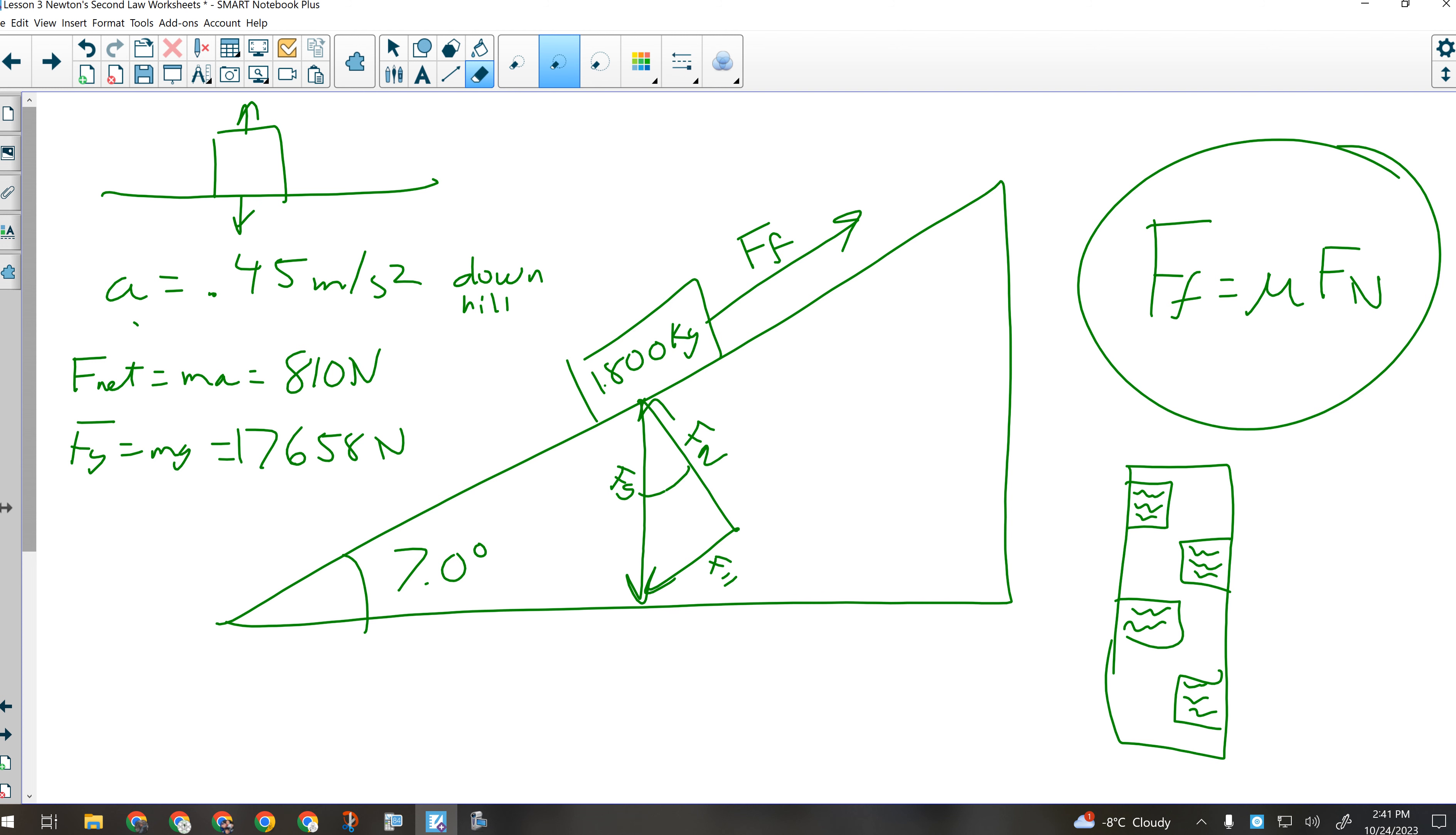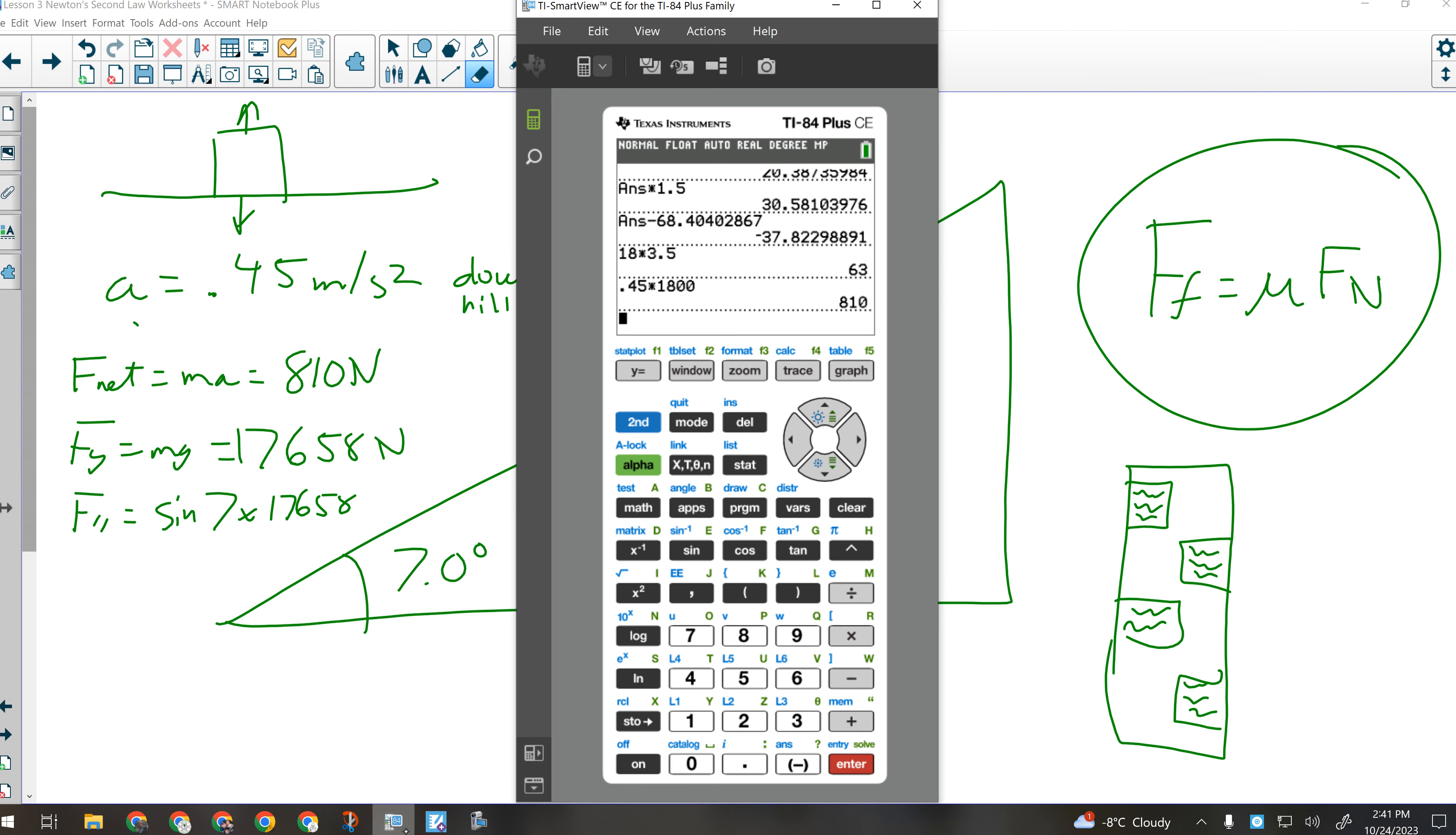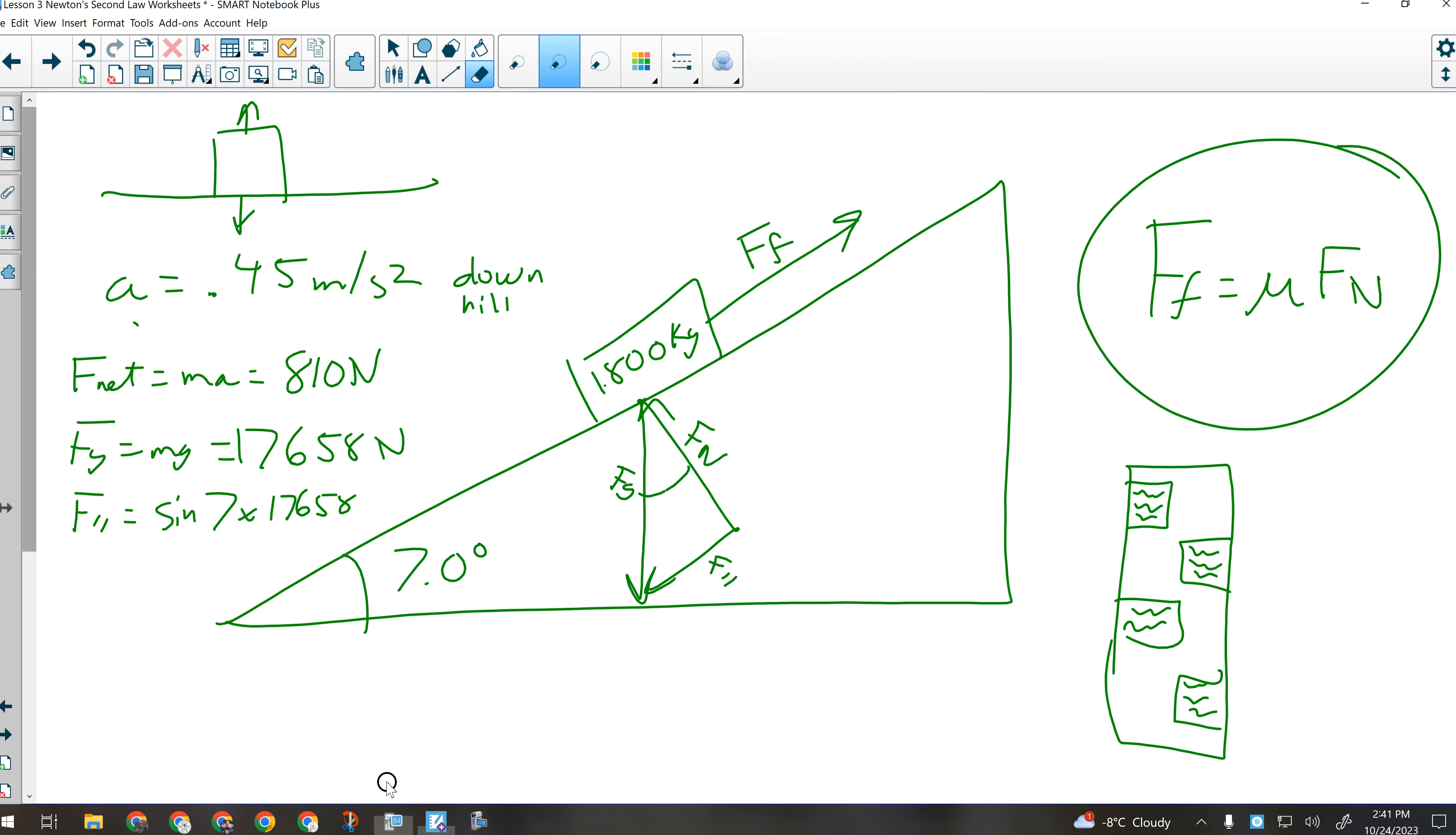And then we've got to calculate F parallel, which is going to be the sine of 7 degrees times 17,658 Newtons. So sine of 7. So the force parallel is 2,151 Newtons. And that's down the hill, obviously, because it's F parallel.